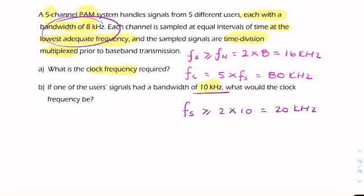So the sample rate will be 20 kHz for all of them. So the clock frequency will be 5 times 20, which is 100 kHz.